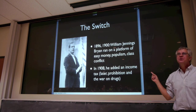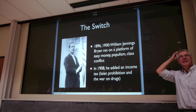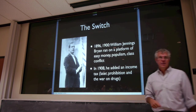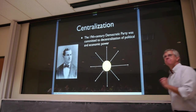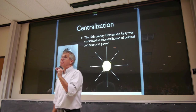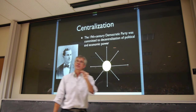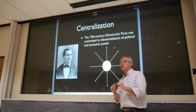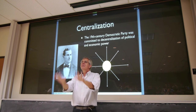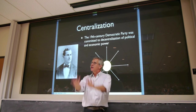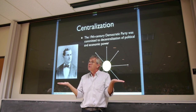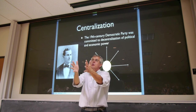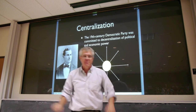This is dramatized in The Wizard of Oz — it's really all about silver and his platform. Later he added an income tax, prohibition, and the war on drugs. The core idea, running through Bryan and later Woodrow Wilson and various Democratic strategists, is that it is good for both political and economic power to be decentralized, to be in the hands of the people. Throughout the 19th century, the party thought that was the natural condition of things, so just leave things alone and power will be decentralized.